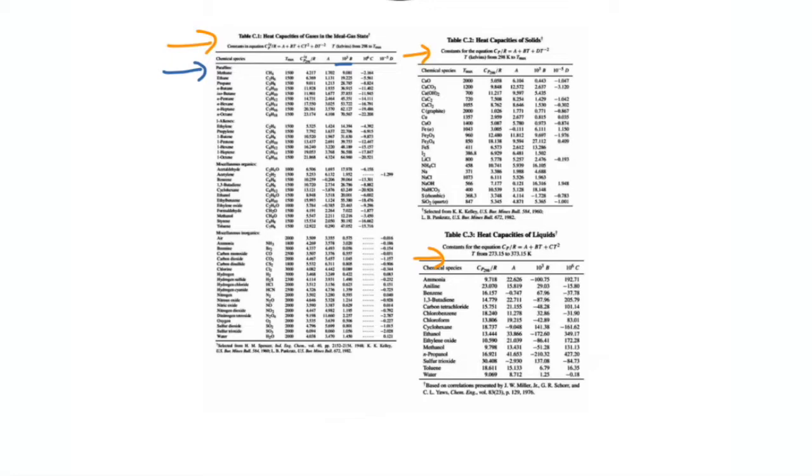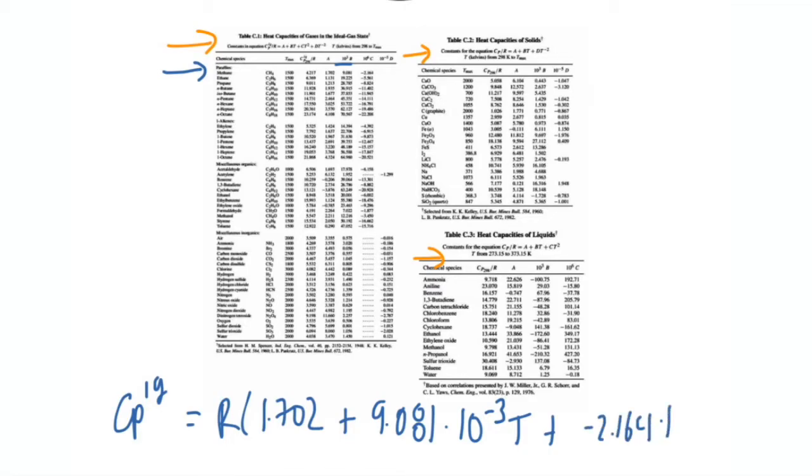Same thing for your C. It would look something like CP ideal gas over R equals A, so 1.702, plus 9.081 times 10 to the negative 3 times T, and then our C, plus negative 2.164 times 10 to the negative 6 T squared. Then you'd plug in your temperature in Kelvin and you can get your heat capacity at constant pressure of your ideal gas.